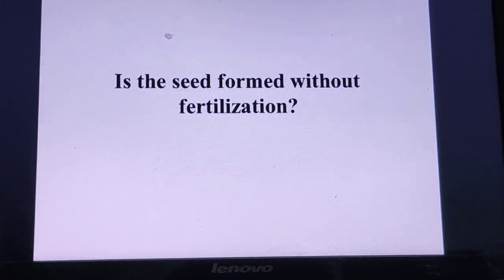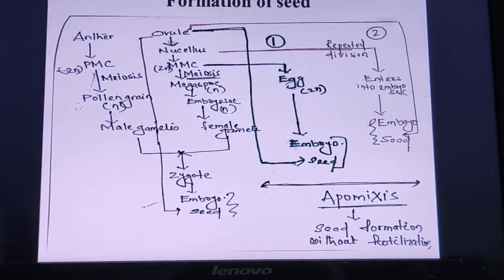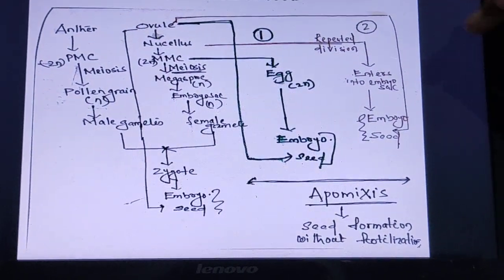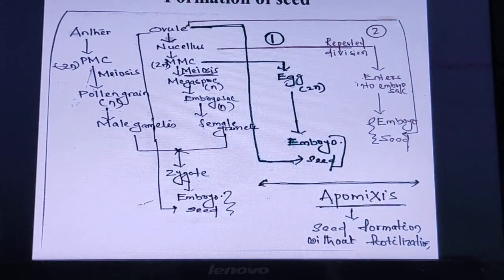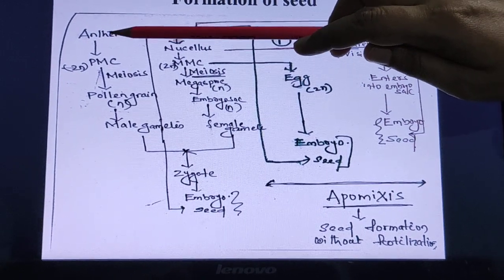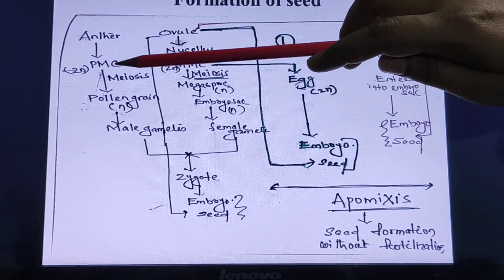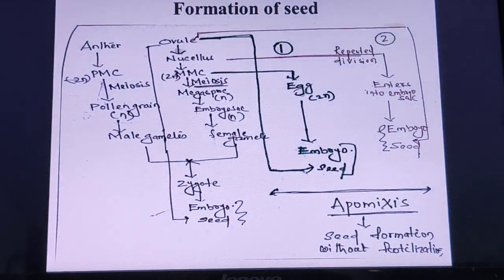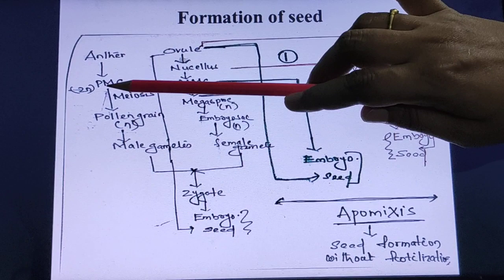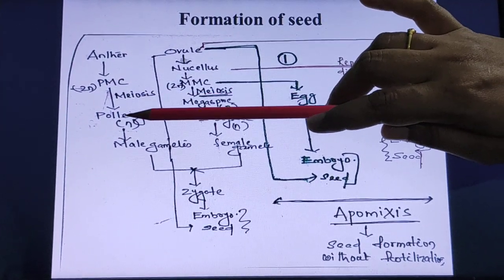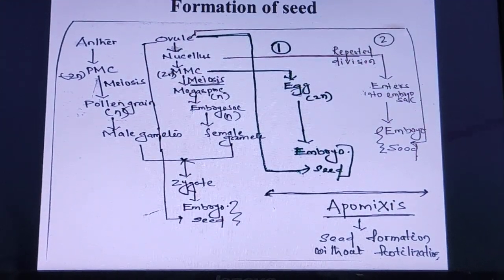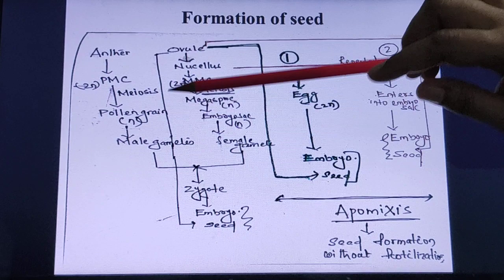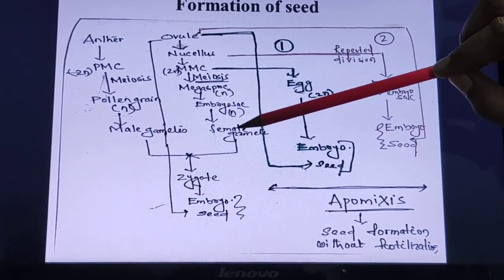Let me explain the normal process of sexual reproduction where the seed is formed. Inside the anther there are pollen mother cells, which are diploid. Each pollen mother cell undergoes meiosis and produces four pollen grains. Each pollen grain contains two male gametes, and these male gametes fuse with the female gamete.